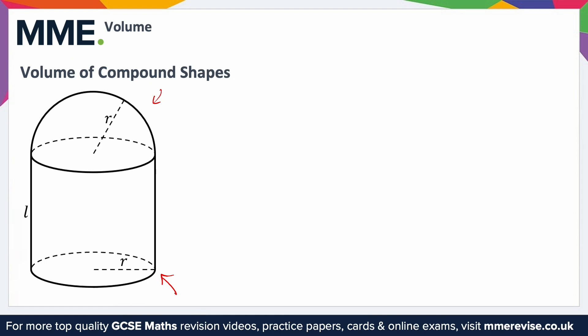So for 3 shapes a, b and c, the volume of the compound shape would be the volume of a, plus the volume of b, plus the volume of c. Where vol of a is the volume of shape a, vol of b is the volume of shape b and so on.